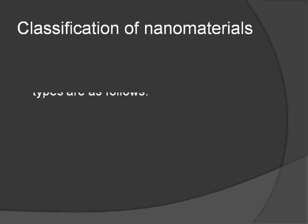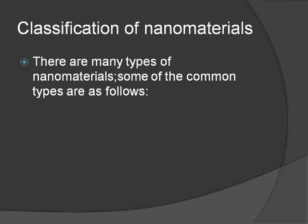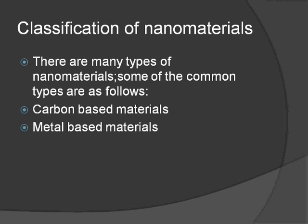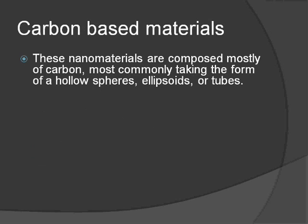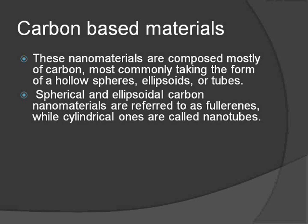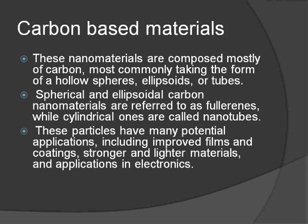There are many types of nanomaterials, but the common types are carbon-based nanomaterials, metal-based nanomaterials, dendrimers, and composites. Carbon-based nanomaterials are composed mostly of carbon and mostly form hollow spheres, ellipsoids, or tubes. The spherical and ellipsoidal carbon nanomaterials are referred to as fullerenes, while cylindrical ones are called nanotubes.